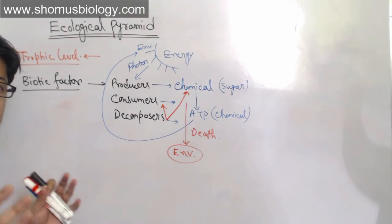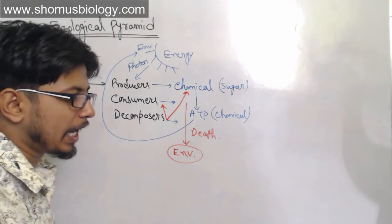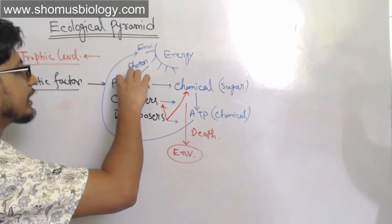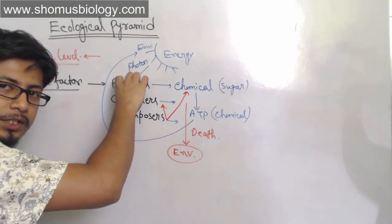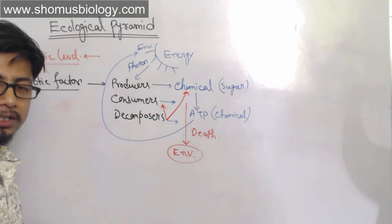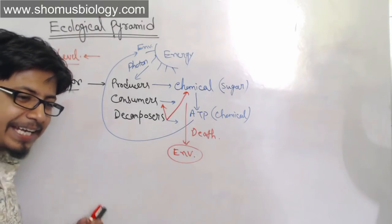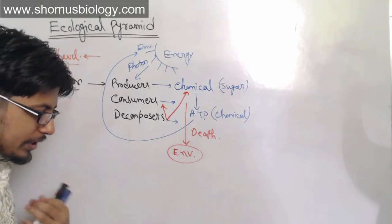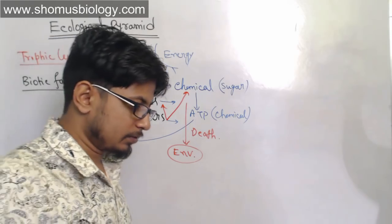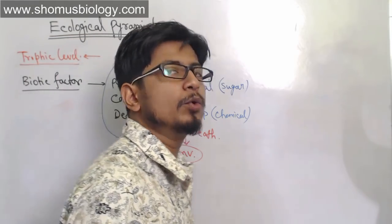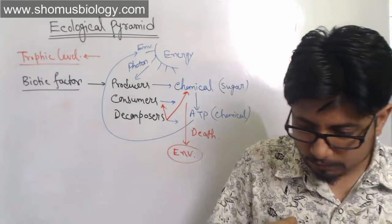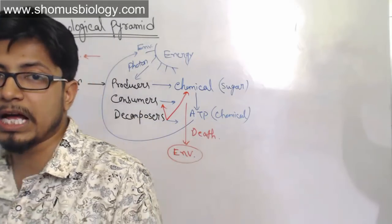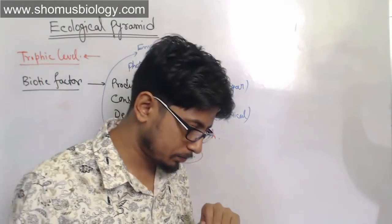In the ecological pyramid, we explain exactly how producers and consumers rely on each other and carry the ecosystem forward. The ecosystem is governed by key rules — two of which are the laws of thermodynamics — and one is known as the unidirectional flow of energy.